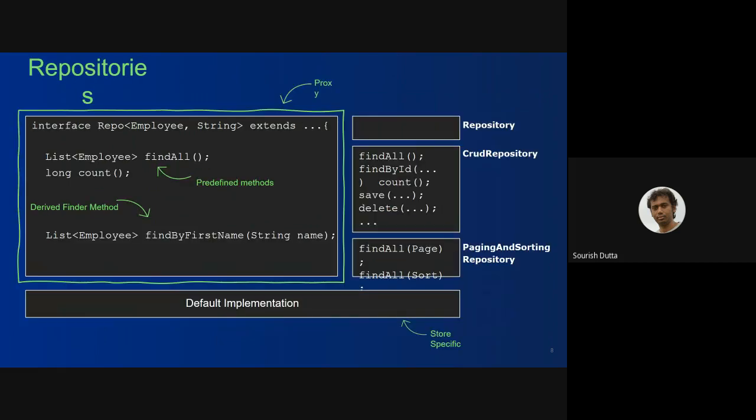In the case of repositories, there are pre-defined methods. Methods like save, remove, find, and others are there by default when you extend your CRUD repository, JDBC repository, or MongoDB repository.